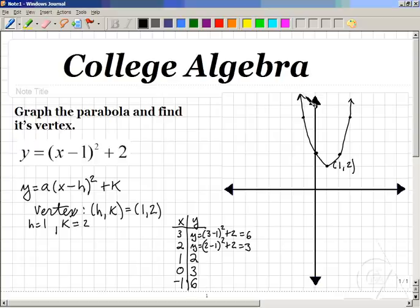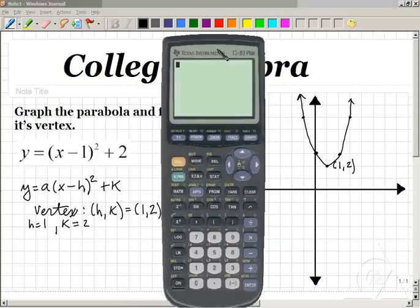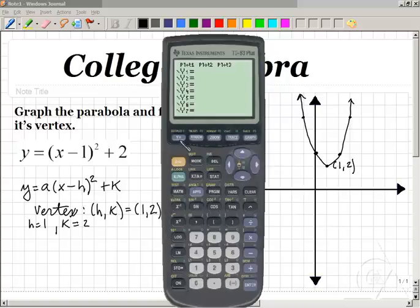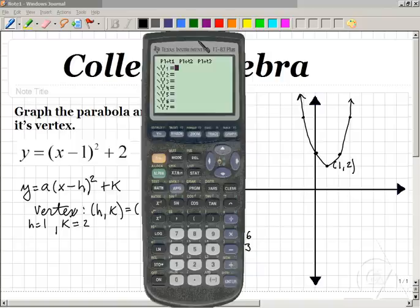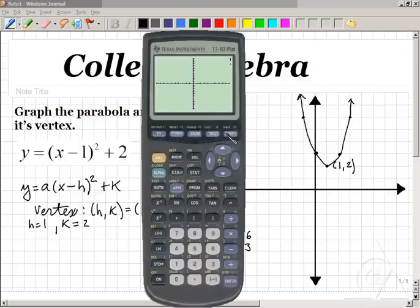Now we can double-check our work by going in and using a graphing calculator, such as the TI-83. On the graphing calculator, we'll first turn it on. And by hitting y equals, we'll bring up the equation editor. And we'll enter in our equation parentheses x minus 1 parentheses squared plus 2. By hitting graph, we see the exact same parabola as we've graphed here.